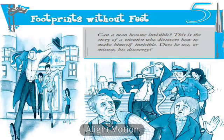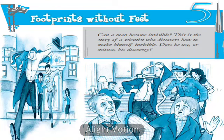Students, today we will do the 5th lesson of your supplementary book that is 'Footprints Without Feet' written by H.G. Wells. The story is about a scientist named Griffin. He discovers rare chemicals which can make a man invisible, but at the same time the man can be touched and felt physically. Let's read and find out how he uses or misuses his powers.